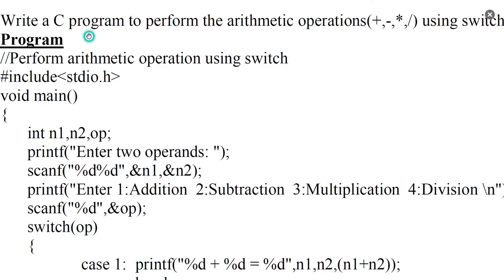Write a C program to perform the following arithmetic operations using switch statement. The operations are addition, subtraction, multiplication, and division. Enter two operands — here the operands are n1 and n2. Then enter the option: 1 for addition, 2 for subtraction, 3 for multiplication, and 4 for division.